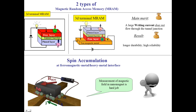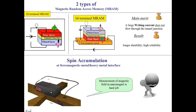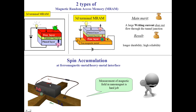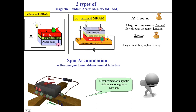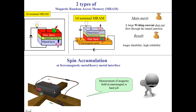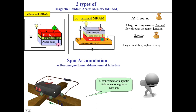Conventionally, the amount of spin accumulation and the efficiency of magnetization reversal are estimated from measurement of the magnetic field which is induced by spin accumulation. The spin accumulation and corresponding magnetic field are induced by the electrical current. This current-induced magnetic field is called the SOT magnetic field. A measurement of magnetic field in a tiny nanomagnet is a challenging task, and the measured magnetic field is very small — typically only about a few Oersteds.